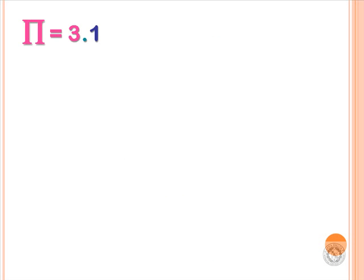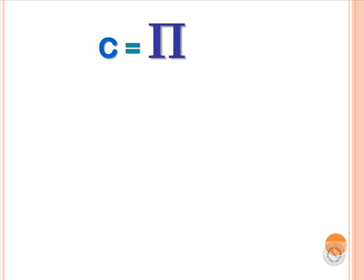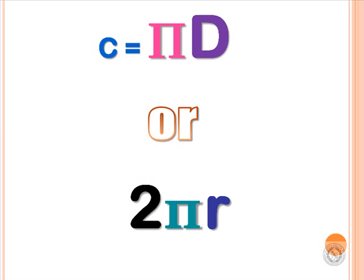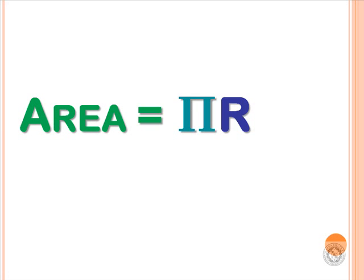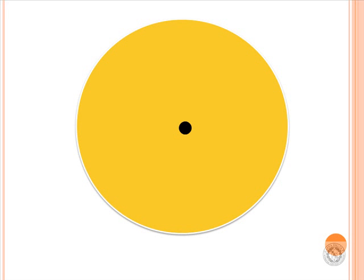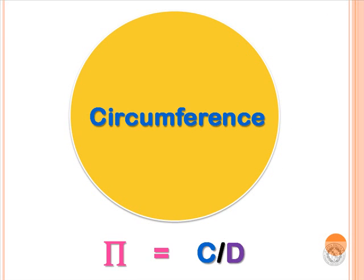Pi is approximately 3.14. Circumference is pi D or 2 pi R. Area is pi R squared. Diameter D is twice the radius. Radius R is half the diameter. Pi is circumference C divided by the diameter.